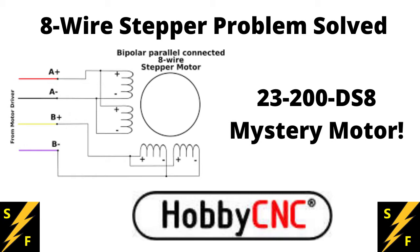They were purchased from Hobby CNC and the model number is a 23-200-DS8. I assume the 23 is a NEMA 23, the 200 means 200 ounce inches, the DS8 I assume stands for eight wires.